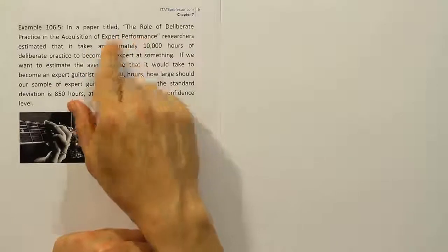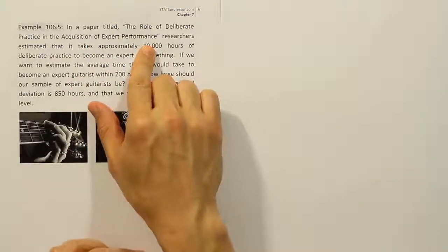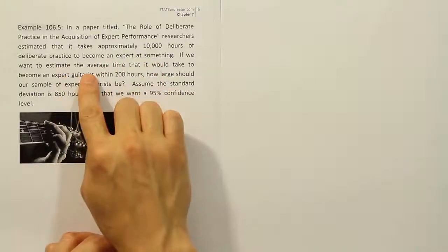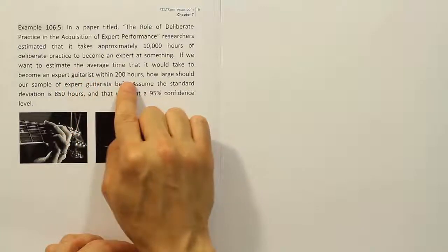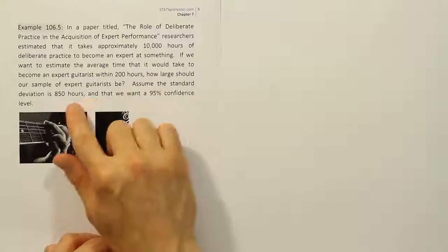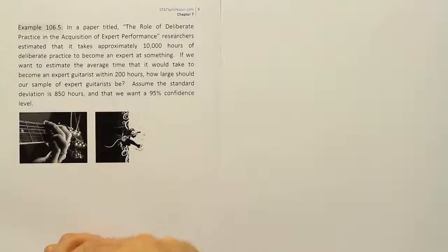In a paper titled 'The Role of Deliberate Practice in the Acquisition of Expert Performance,' researchers estimated that it takes approximately 10,000 hours of deliberate practice to become an expert at something. If you want to estimate the average time that it would take to become an expert guitarist within 200 hours, how large should a sample of expert guitarists be? Assume the standard deviation is 850 hours and that we want a 95% confidence level.